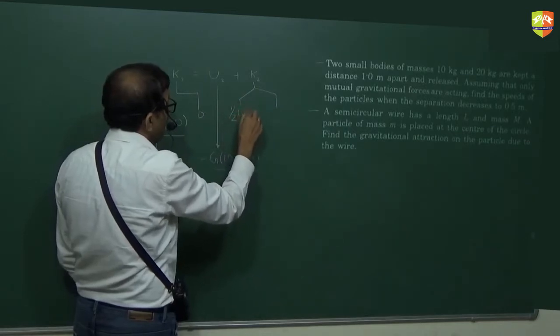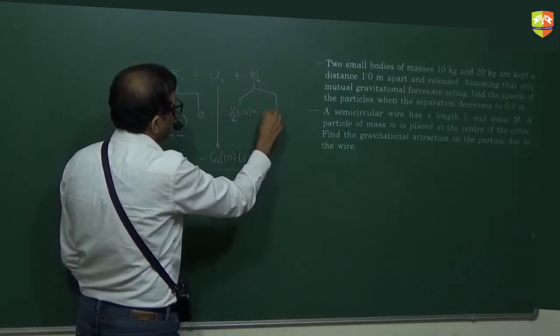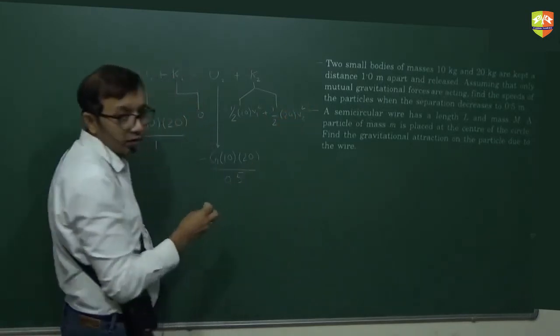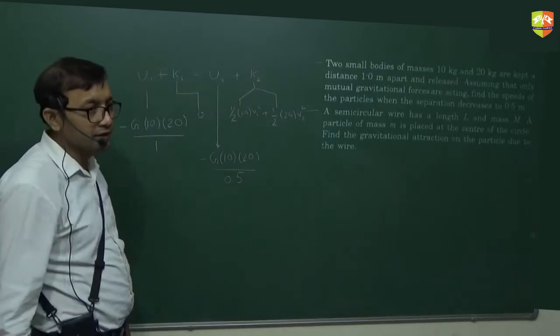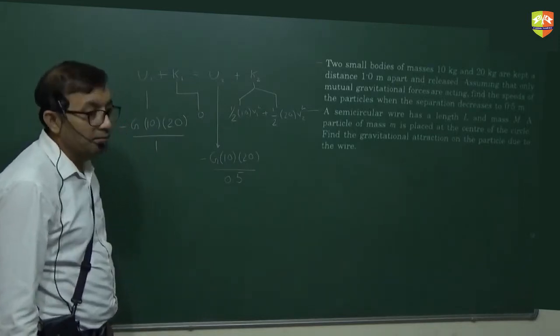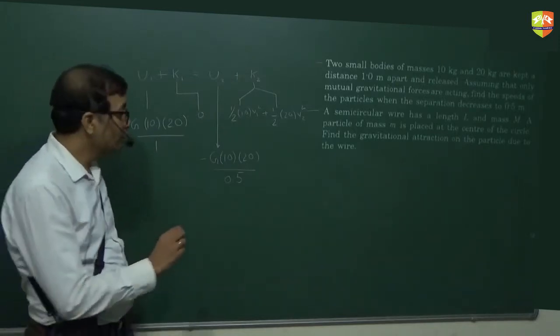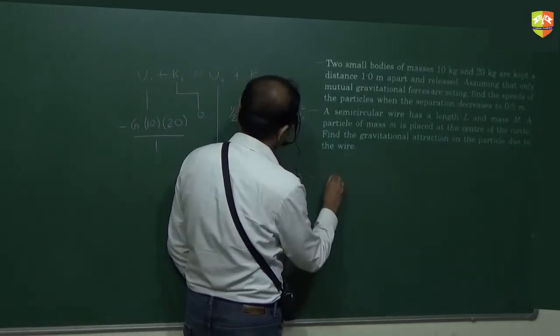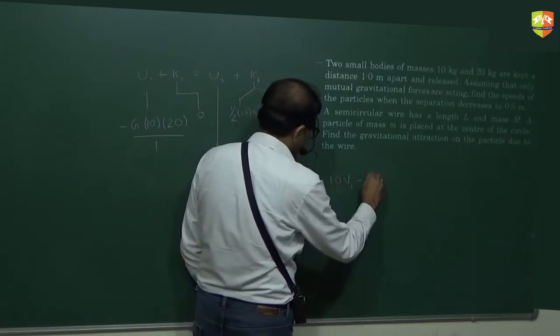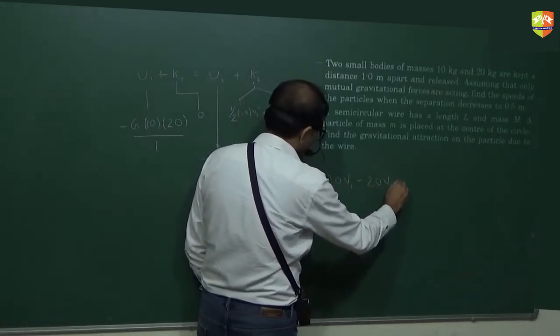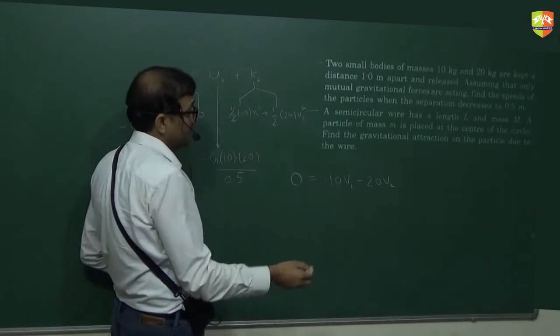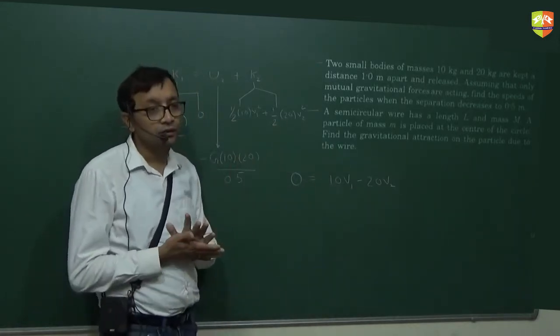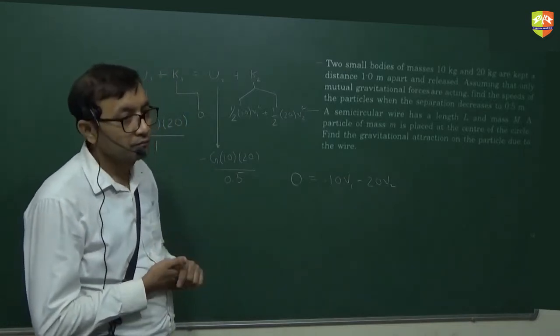So separation decreases, so g into 10 into 20 divided by 0.5. And K2 there will be two kinetic energies: half m1 v1 square plus half m2 into v2 square. Both will acquire velocities. But the momentum will also be conserved, so initial momentum zero will be equal to 10 into v1 minus 20 into v2. These are the two equations. v1 equal to 2v2. Substitute here, you'll get the v2. Clear?